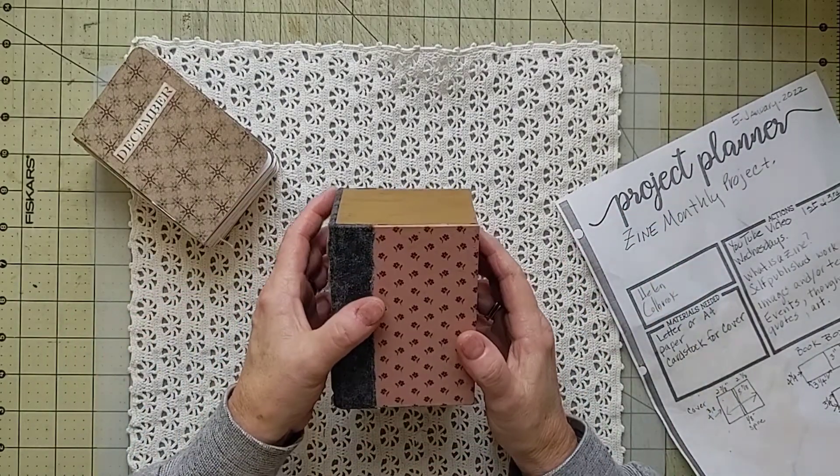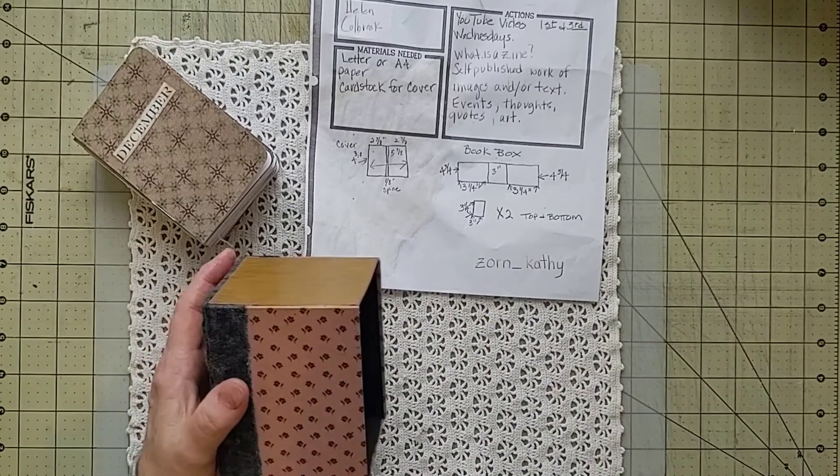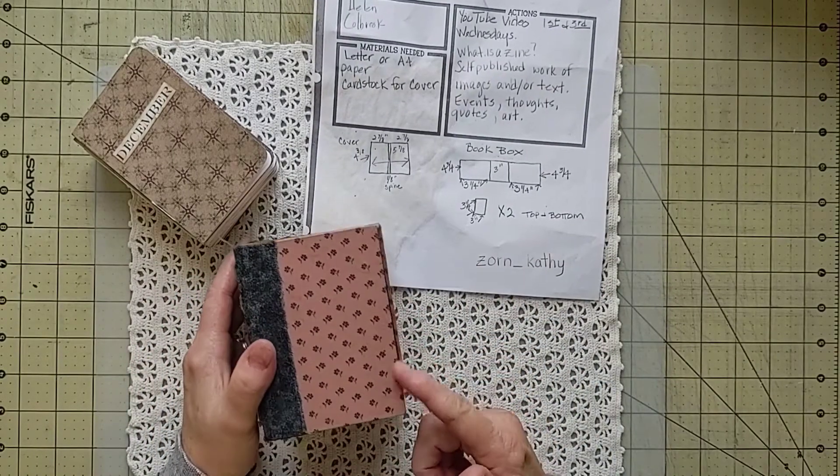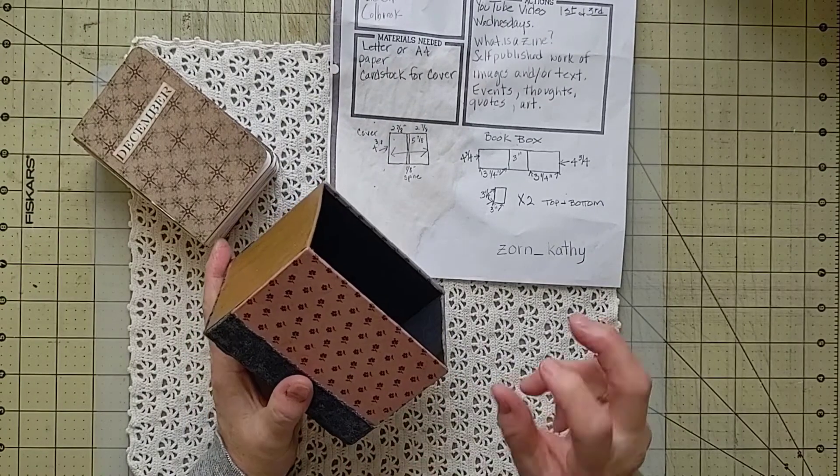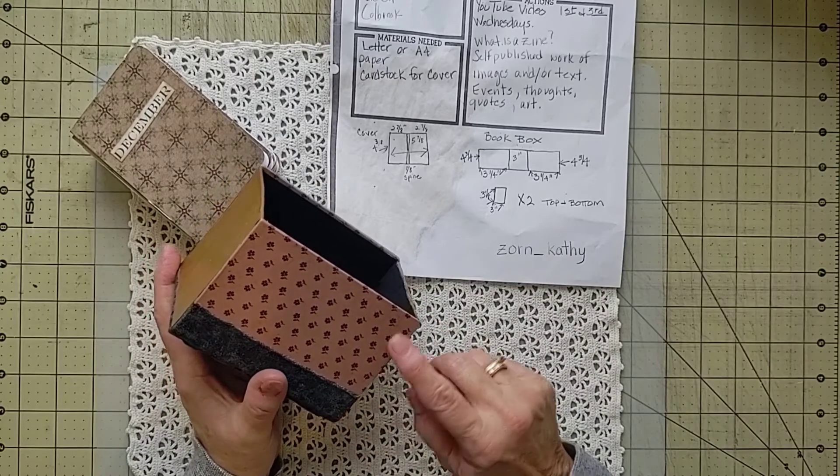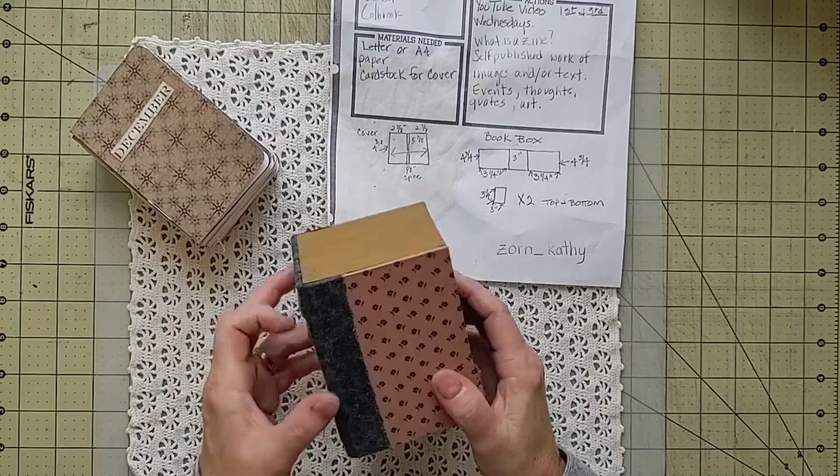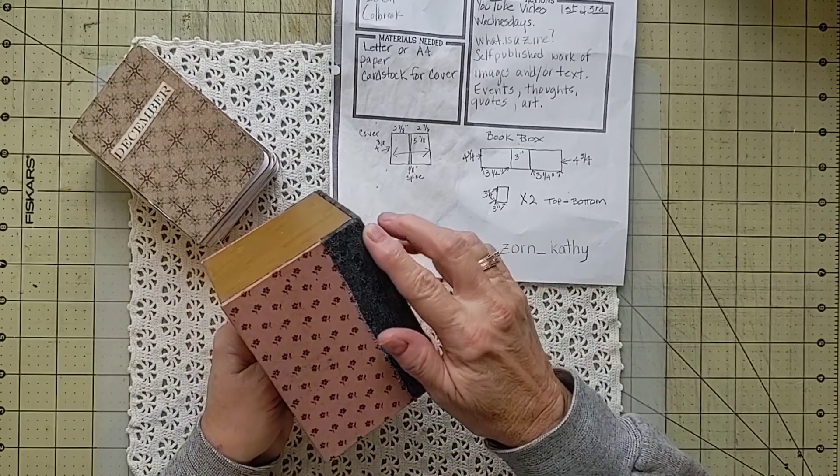So what I have come up with is the book box and it's four and three quarter inches tall. The width of the pages are three and a quarter. The spine is three inches and then again three and a quarter and four and three quarters.